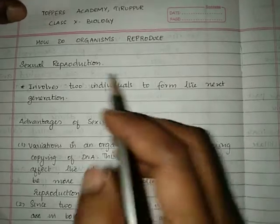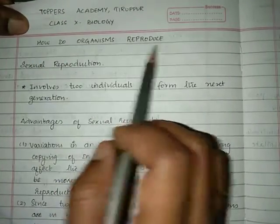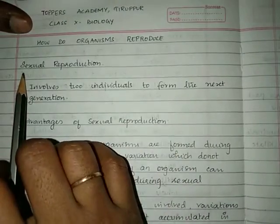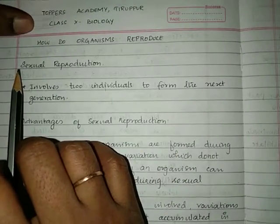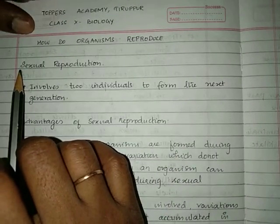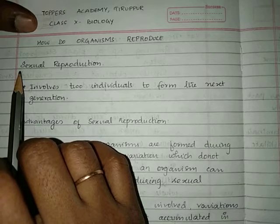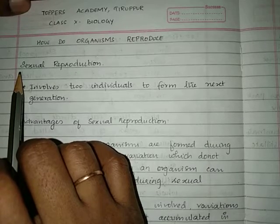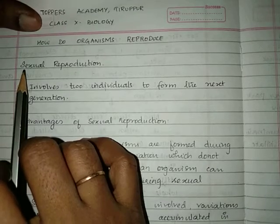Welcome back students. We will continue with the same lesson: how do organisms reproduce. We have completed sexual and asexual reproduction, including the different types of asexual reproduction seen in different types of organisms including plants.